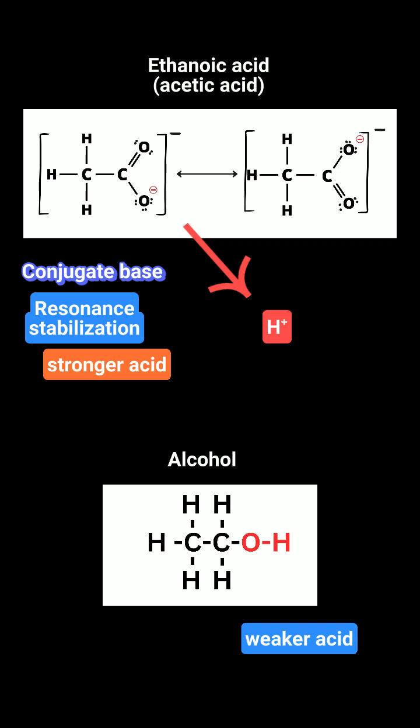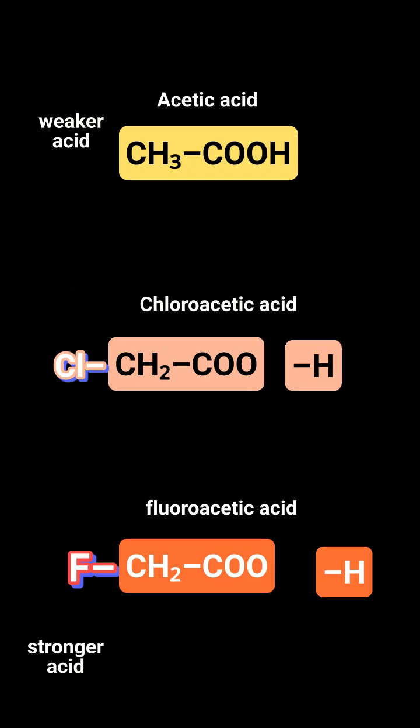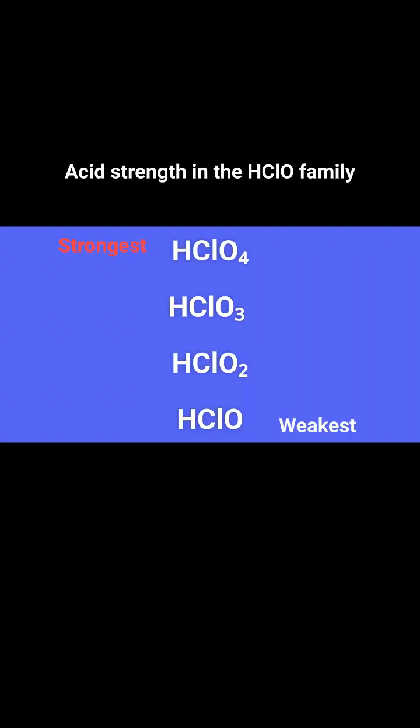Inductive effects also play a significant role. Electronegative atoms or groups pull electron density away from the acid's OH bond, weakening it and increasing acidity. The acidity of oxoacids, which contain oxygen atoms bonded to a central atom, increases as the number of oxygen atoms rises. This happens because extra oxygen atoms pull electrons away and stabilize the conjugate base through resonance.